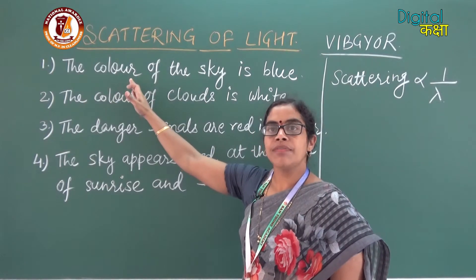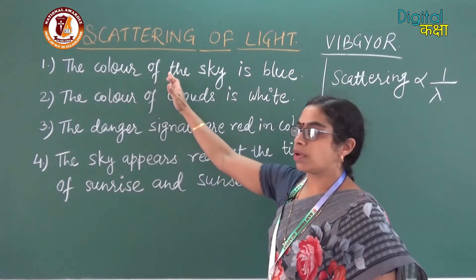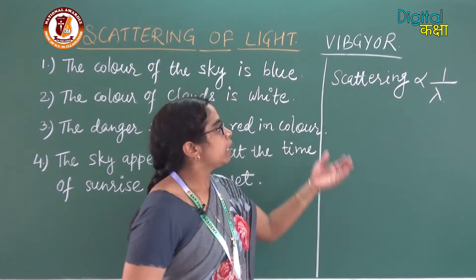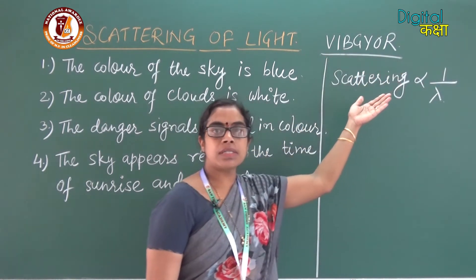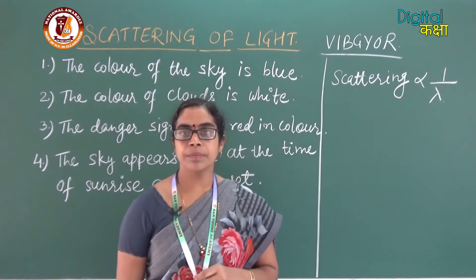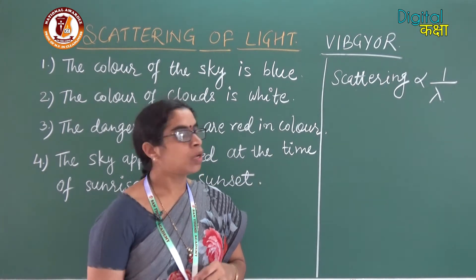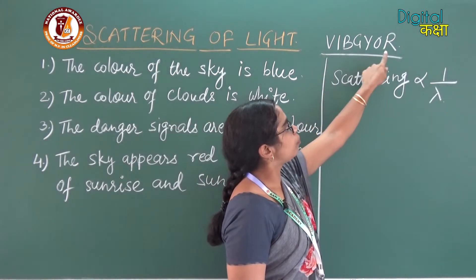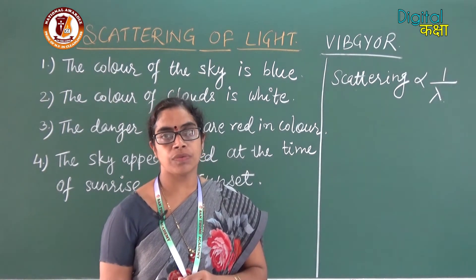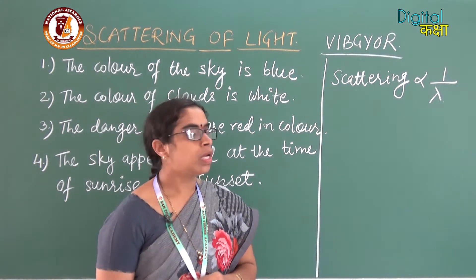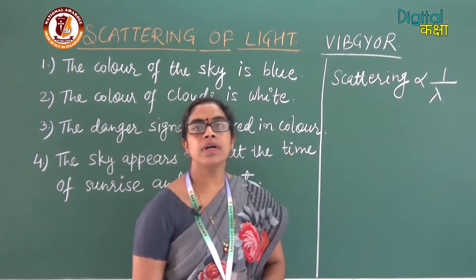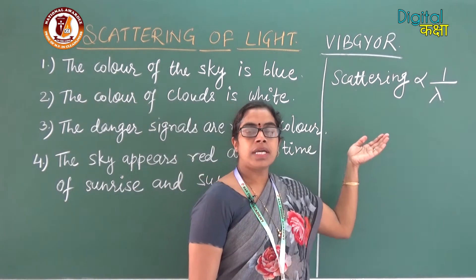The first application of scattering of light is that the color of the sky is blue. In the spectrum, when we move from the violet color towards the red color, the wavelength keeps on increasing. So if we compare the wavelength of blue with any of the colors on the right side, blue color has a lesser value of wavelength.